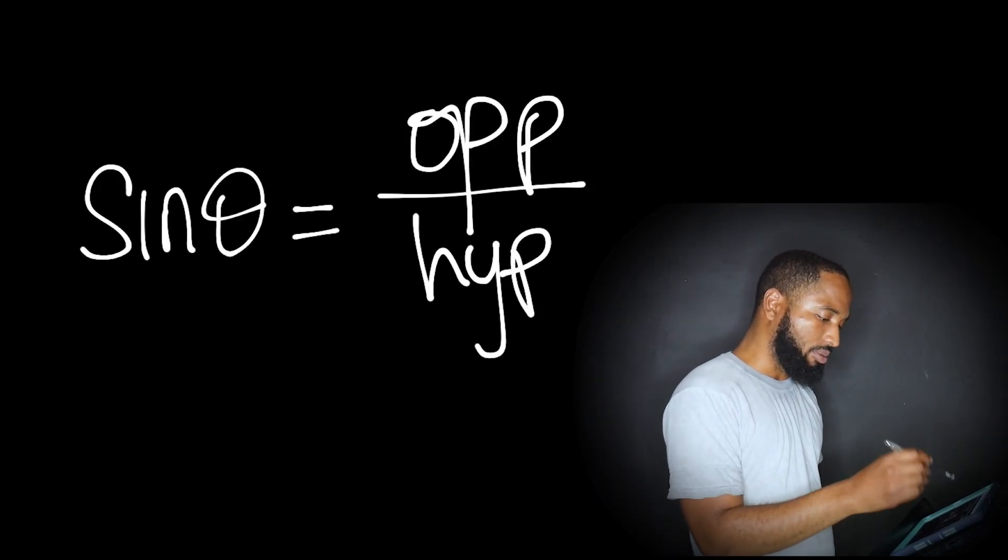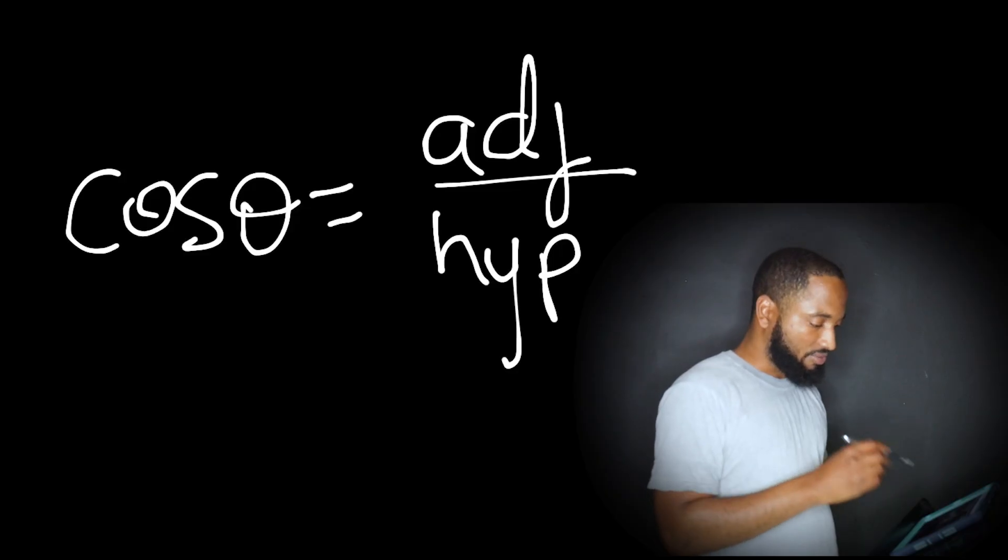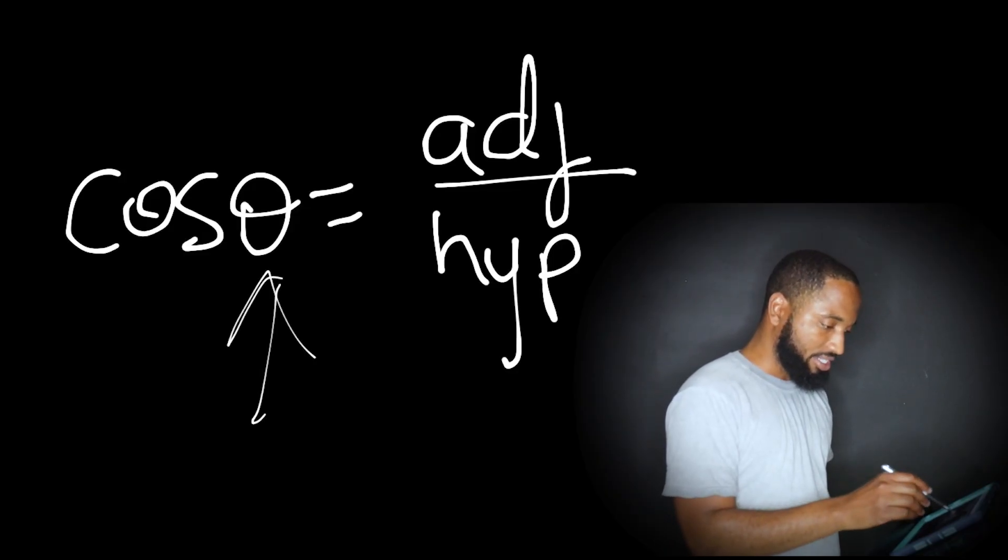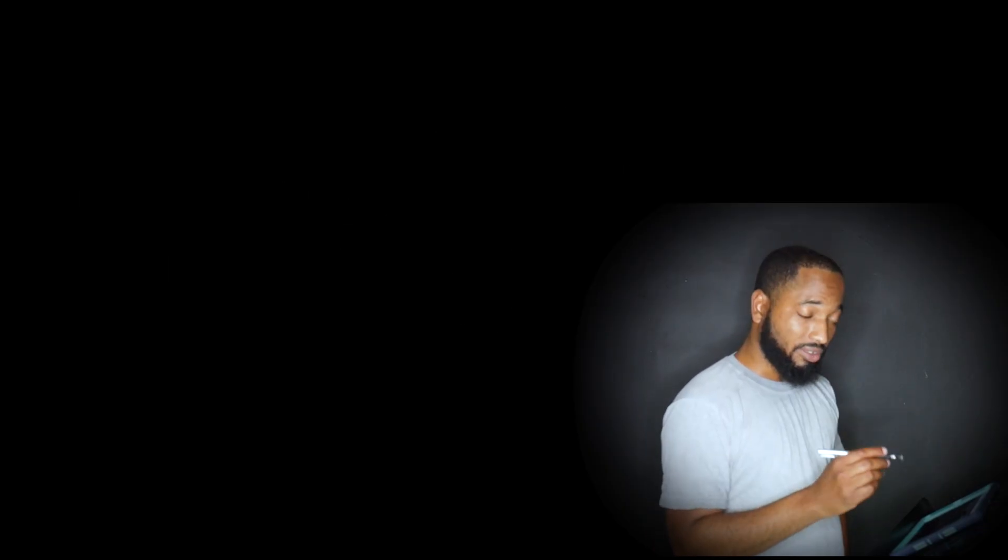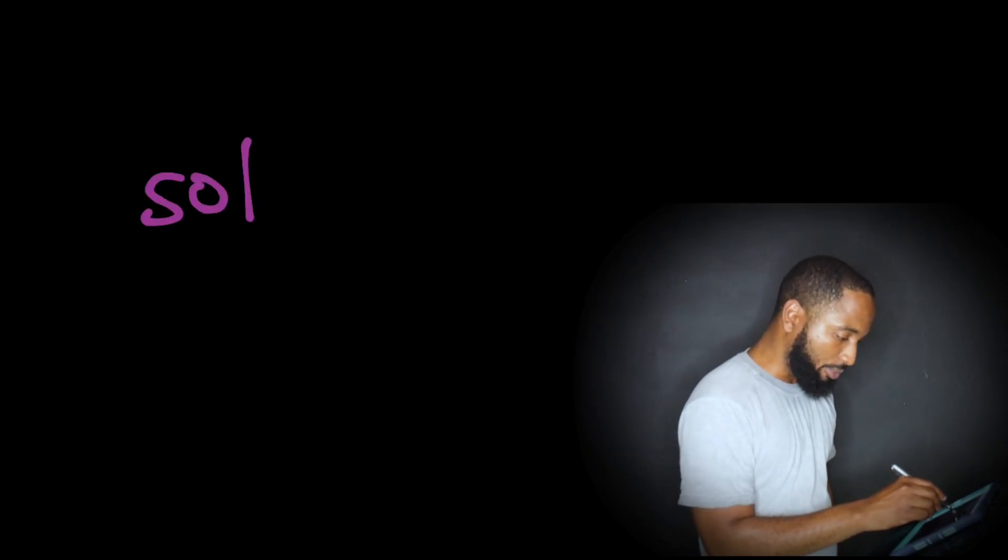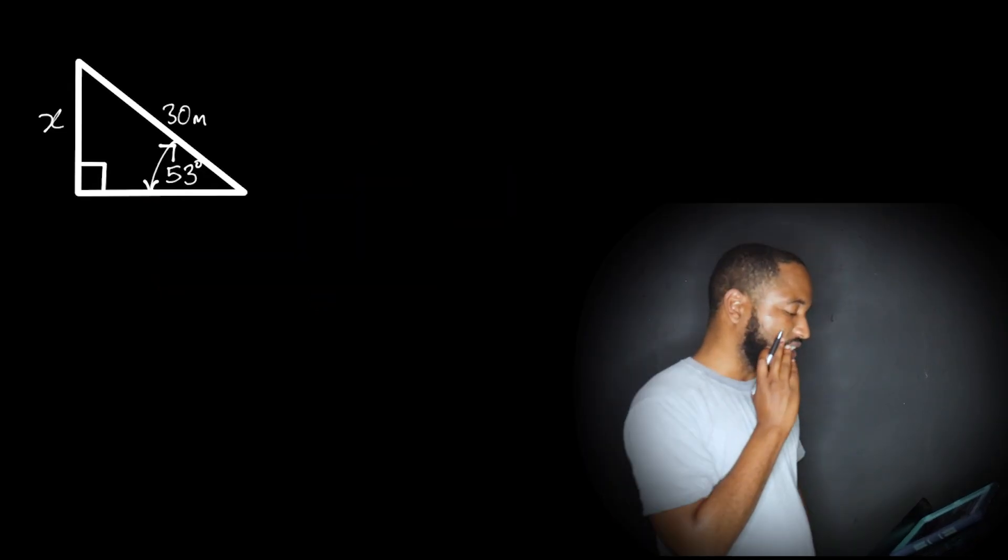And of course you need to know what represents what. So you need to know your ratios. Sine is opposite over hypotenuse. Cosine of theta is adjacent over hypotenuse. And our boy tan is opposite over adjacent. And of course the common saying that we use to memorize: SOH CAH TOA. That's the acronym you can use to memorize that.